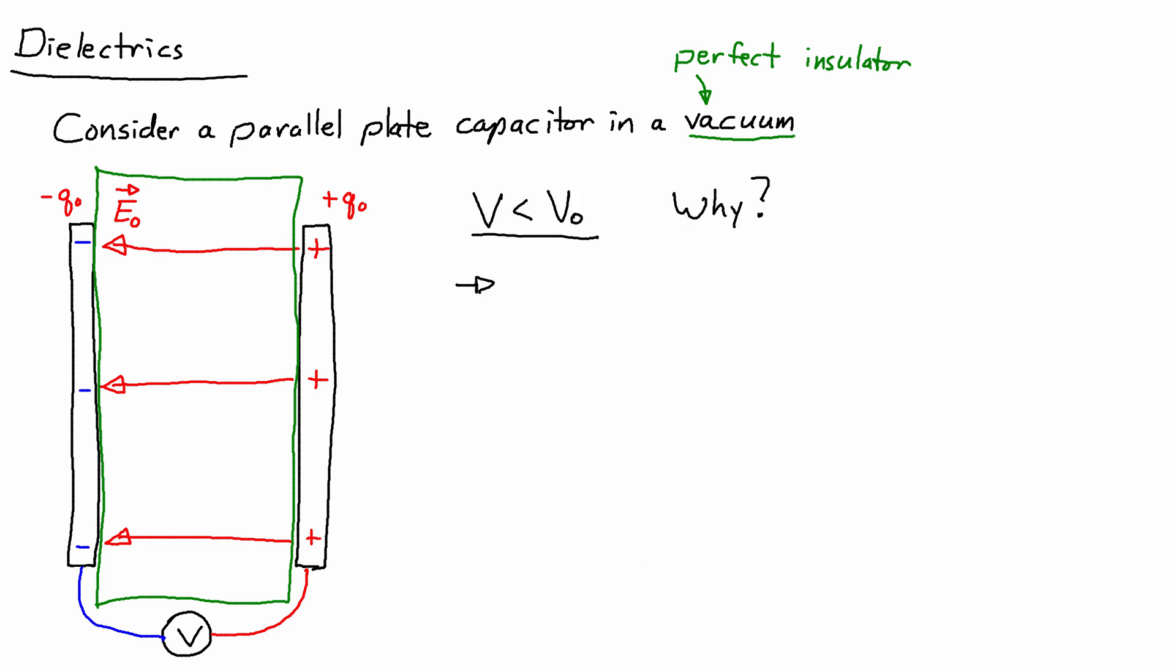So at this point, the charge has not changed. I can write that Q is still Q0. What happens, though, is that this insulator is inside an electric field. So the insulator gets polarized at the level of the individual atoms. And that sets up an induced electric field, E induced, inside the insulator.